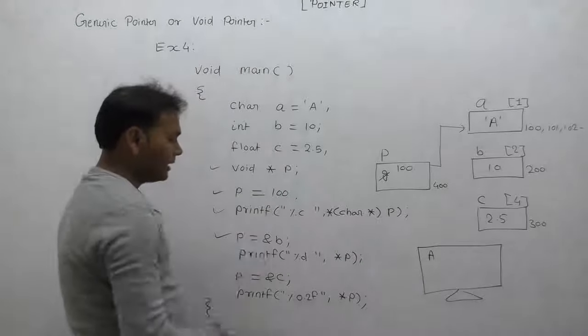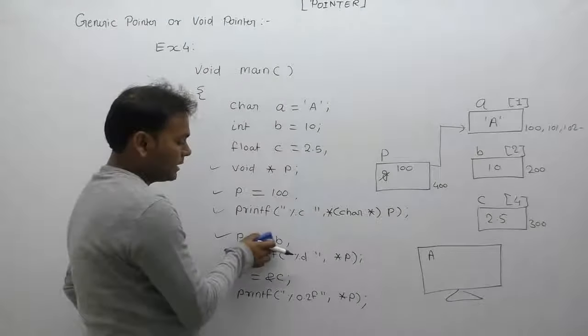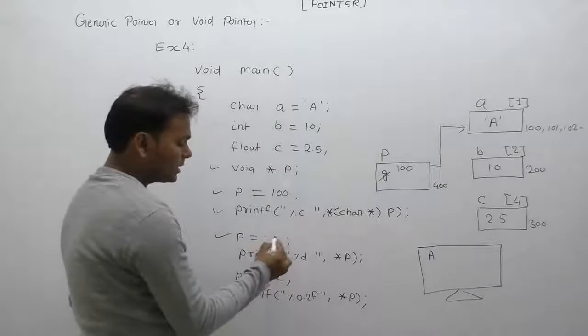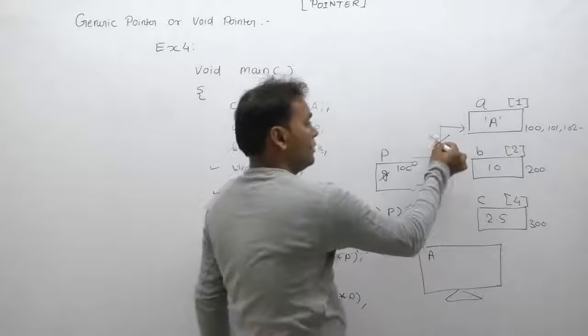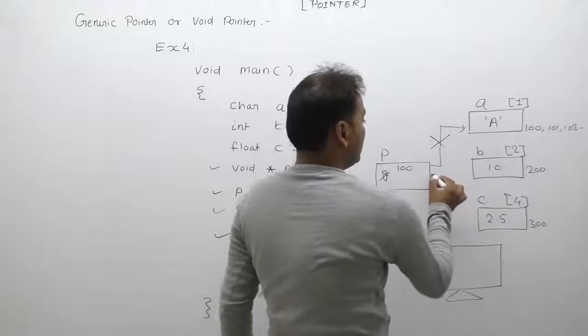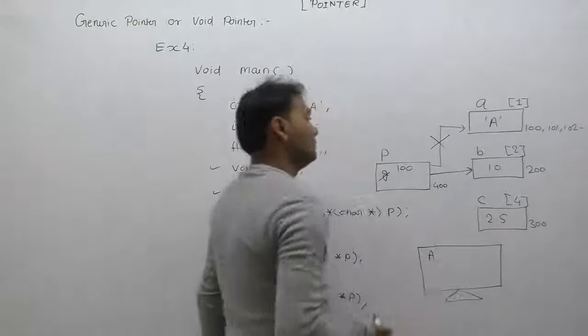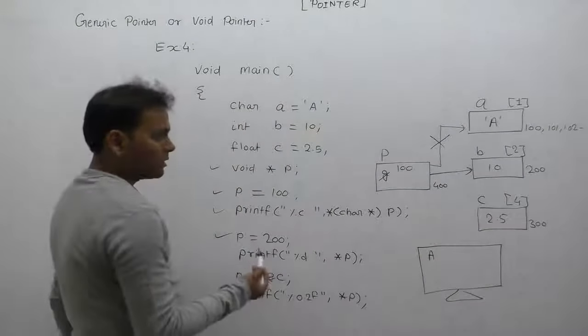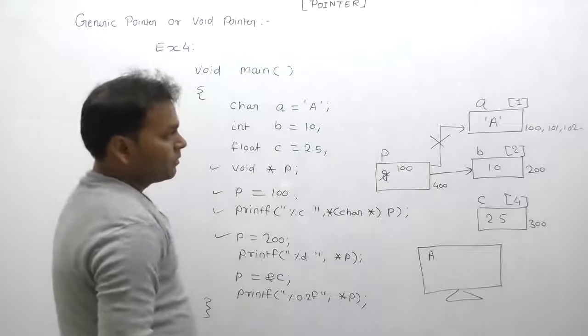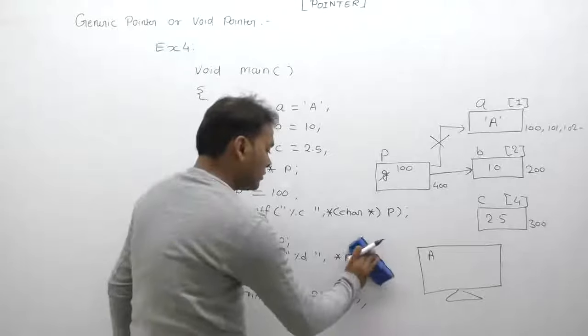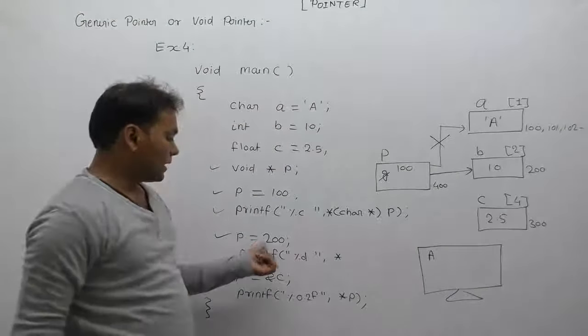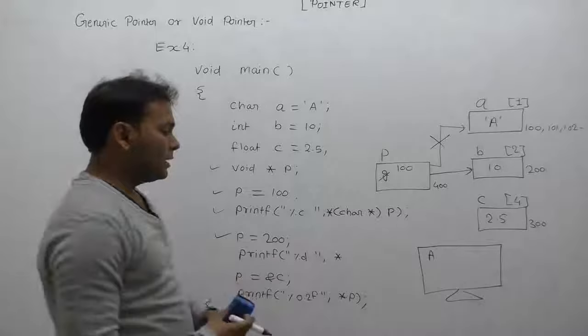Next, same pointer p is assigned the address of b. b's address is 200. Immediately the same pointer stops pointing to the previous location and now points to location b. For b, we cannot directly apply star p. It requires type casting. Here we write int star p. Currently p has the address in the form of int star.